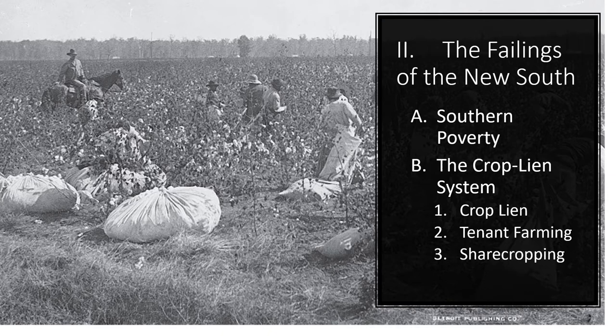Tenant farmers paid cash rent to the landowner and were free to choose and manage their own crop. However, tenant farming caused significant damage to the South. Without ownership of the land, tenant farmers were required to grow high-yield crops, which drained the land of nutrients. This also forced families to purchase food from local merchants, leading to further debt. Increased use of fertilizers put the land at greater risk. In sharecropping, sharecroppers generally gave up to 50% of the crop to landlords, forcing Southern Blacks to be more economically dependent on whites.